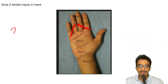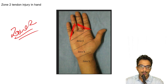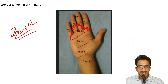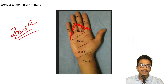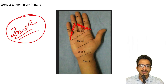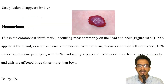If an injury involves the distal phalanges, it is zone 1. If it involves the mid to proximal phalanges and the metacarpophalangeal joint, it is zone 2. Near the carpals, that is zone 3. If injury is shown in the diagram at the mid-proximal phalanges level, it is a zone 2 tendon injury in the hand.